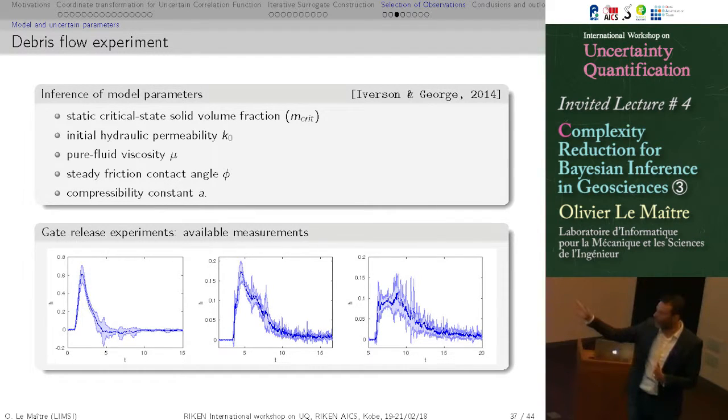So to learn these coefficients, this model coefficient, we have a gate-release experiment. So it's a channel. I think it's more than 75 meters long, five meters across. There is a gate. They prepare the mixture of gravel, muds, and everything. And then they open the gate, the debris flow downward. And at several locations downstream, they are measuring the debris height.